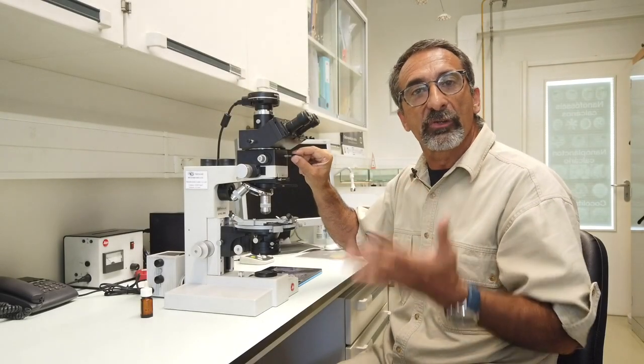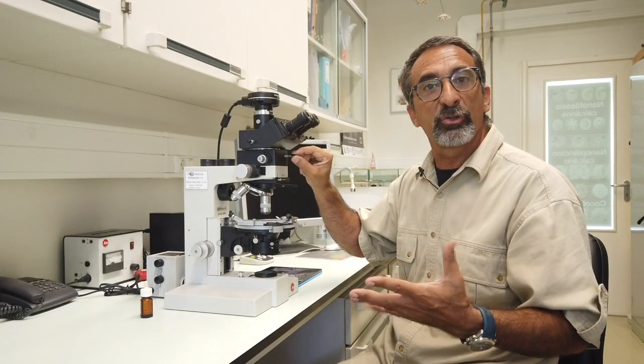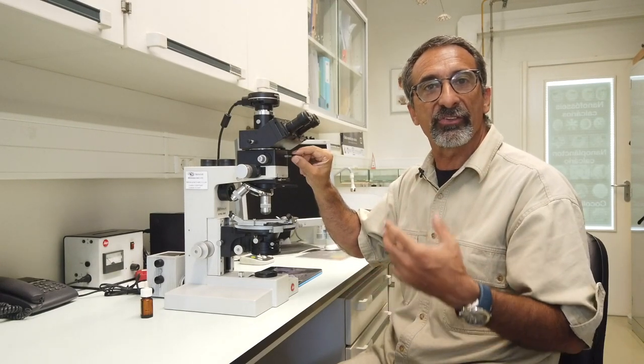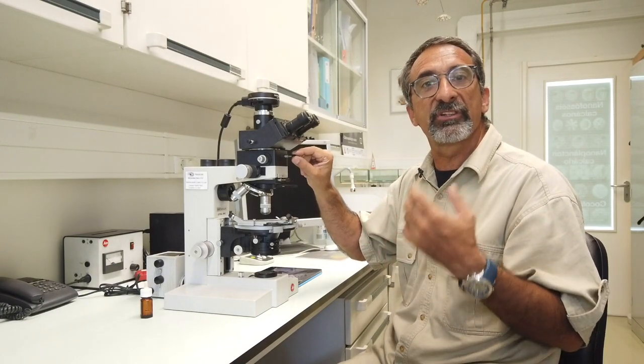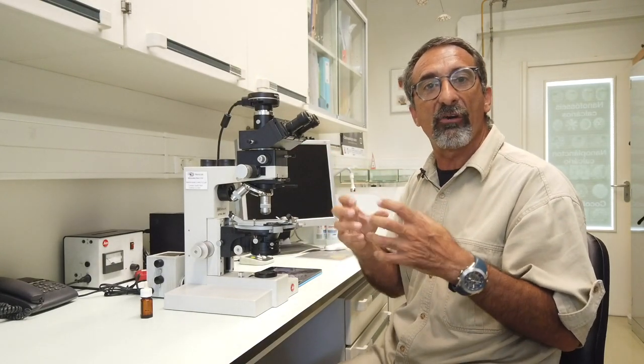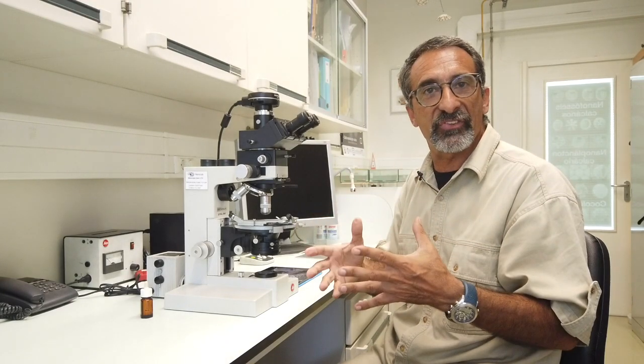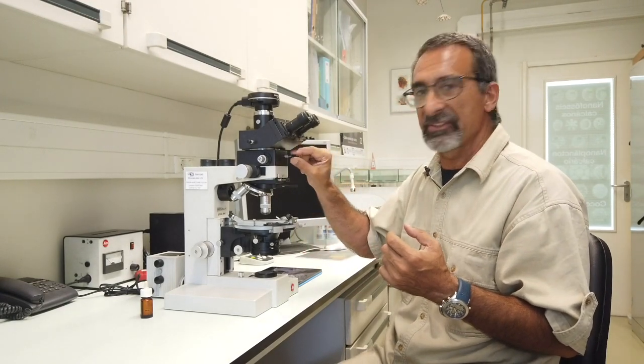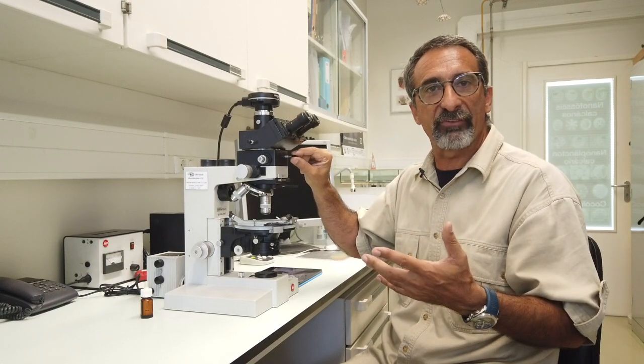Here we have an auxiliary lens, the Amici Bertrand lens, that normally we don't use with calcareous nanofossils, but in some cases is useful namely to determine the optical sign of the crystal. In our case we already know what it is. Calcite has a specific optical signal that we'll discuss later on. But this is also an important tool in a petrographic microscope.